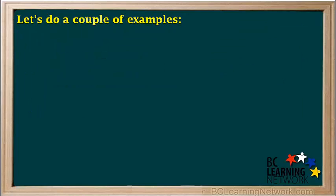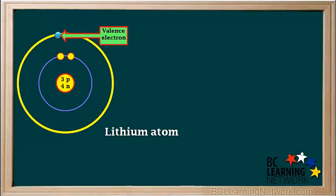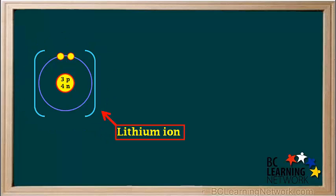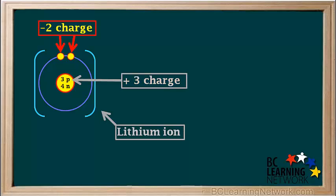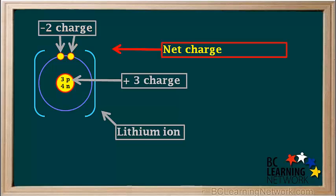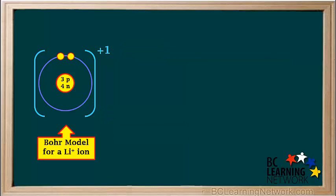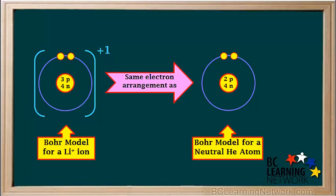Here's the Bohr model for an atom of lithium. We can see that a lithium atom has one valence electron. Lithium easily loses its valence electron to form a lithium ion. The Bohr models of ions are usually written with square brackets around them like this. The three protons in a lithium ion supply a positive 3 charge, and the two remaining electrons supply a negative 2 charge. So the net charge on a lithium ion is positive 3 minus 2, which equals positive 1. The net charge of positive 1 is written on the top right of the bracket. So here's the finished Bohr model for a Li⁺ ion, or Li⁺ cation.